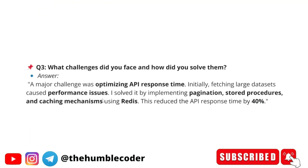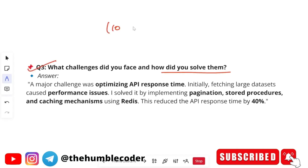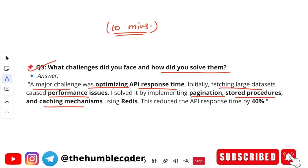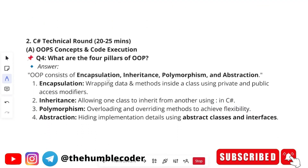Moving on to the next question: 'What challenges did you face and how did you solve them?' All these project-based questions were asked within those 10 minutes. A sample answer: 'A major challenge was optimizing API response time. Initially, fetching large data sets caused performance issues. I solved it by implementing pagination, stored procedures, and caching mechanisms using Redis. This reduced the API response time by 40%.'